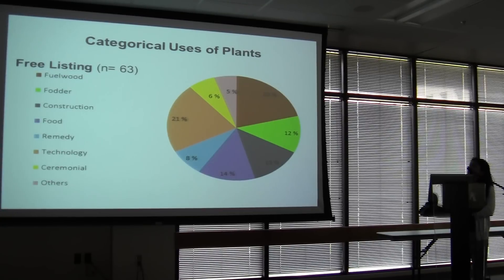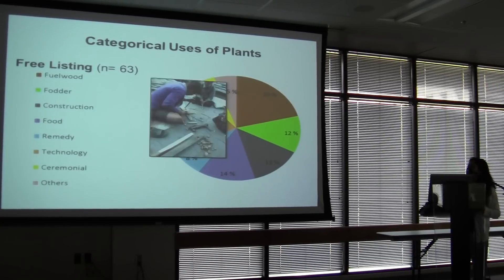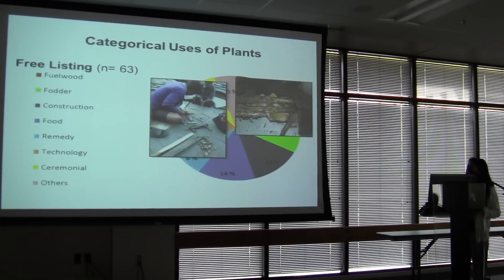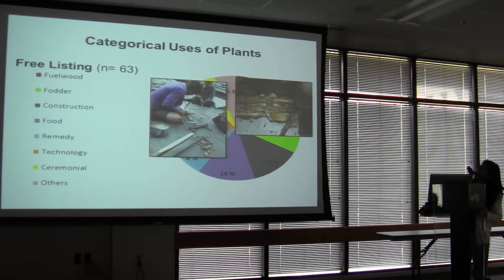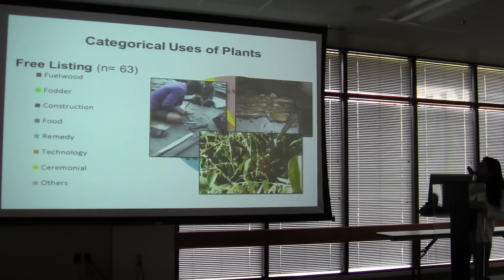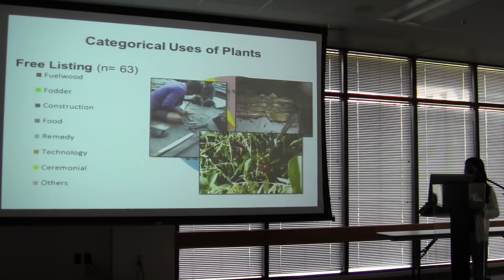Looking at the categorical uses of plants, they are mostly used for technology — crafts and tools — such as making a plow. The second category was fuel. Then food and construction had the other higher percentages. One example is a species of Vitaceae used as a fruit.